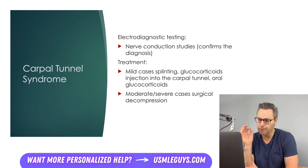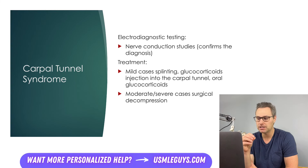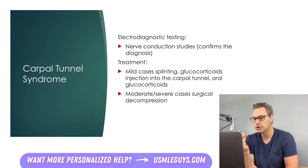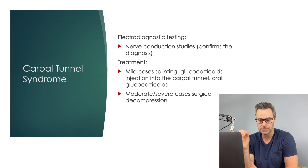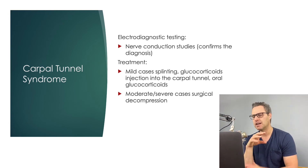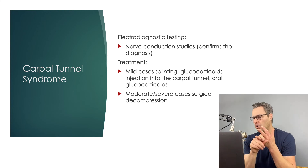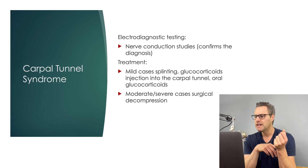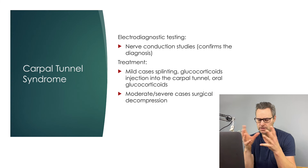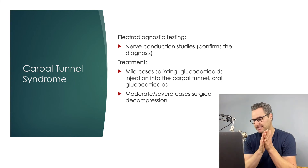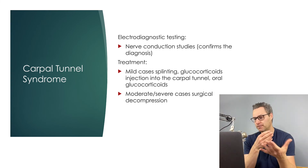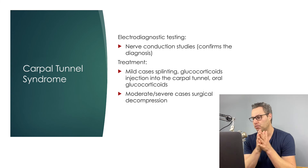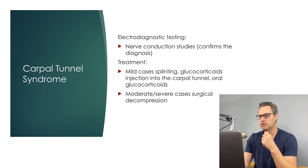The diagnosis is definitively made with electrodiagnostic testing, specifically nerve conduction studies, which will show impaired median nerve conduction across the carpal tunnel. Treatment depends on severity. For mild cases, splinting, glucocorticoid injections into the carpal tunnel, and oral glucocorticoids can be used. If these therapies are unsuccessful or the patient has moderate to severe symptoms, surgical decompression can be performed to relieve those symptoms.